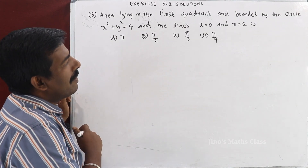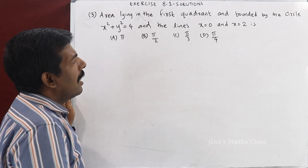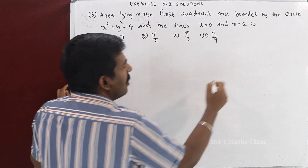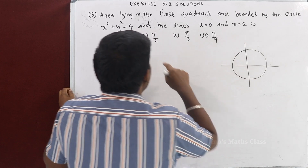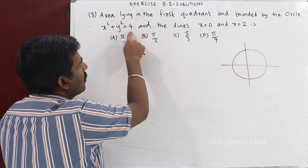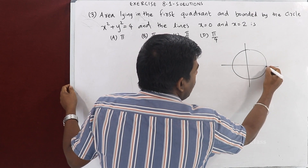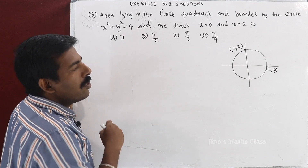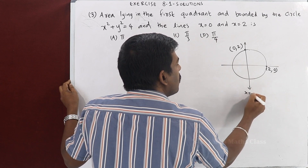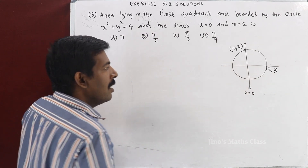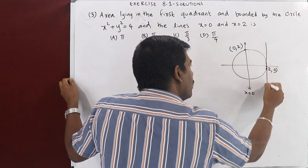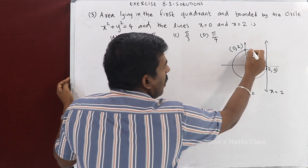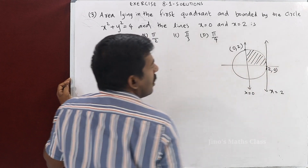The third question is: find the area in the first quarter. The equation of the circle is x² + y² = r². This is centered at the origin. The radius r² = 4, so r = 2. The point is (2, 0). The limits are x = 0 to x = 2. In the first quarter, this is the area we need to calculate.